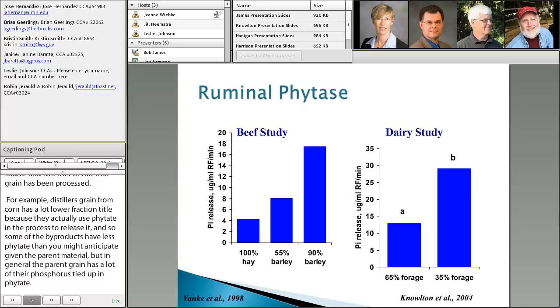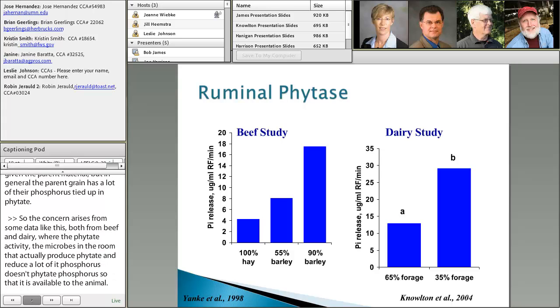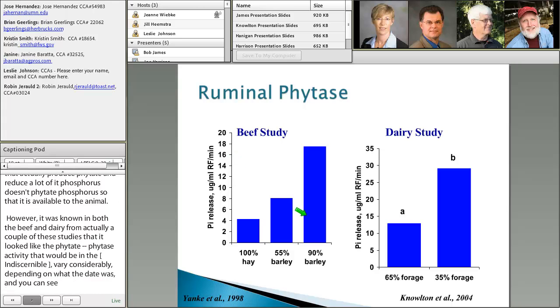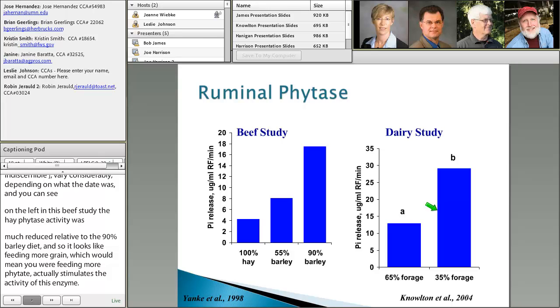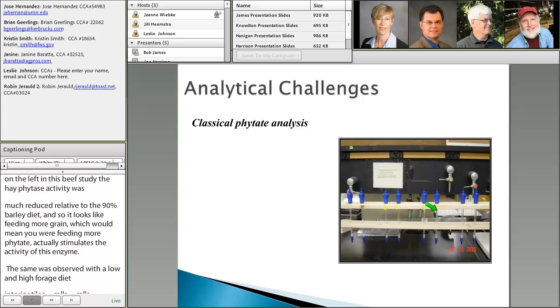Concern arises from data in beef and dairy where microbes in the rumen produce phytase and release phytate phosphorus so it's available to the animal. However, from just a couple studies, it looked like phytase activity in a milliliter of rumen fluid varied considerably depending on diet. In this beef study, hay phytase activity was much reduced relative to a 90% barley diet. Feeding more grain, which means more phytate, stimulates enzyme activity. The same was observed with low and high forage diets in dairy cows. This leads to the question: what is the availability of phosphorus in the diet, and should I be concerned?